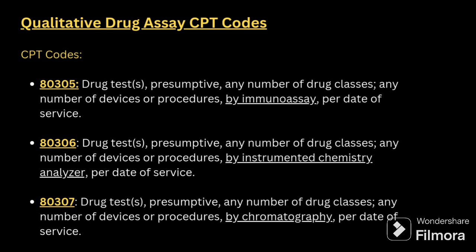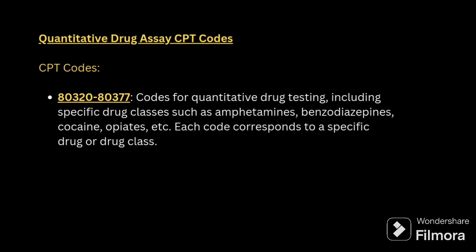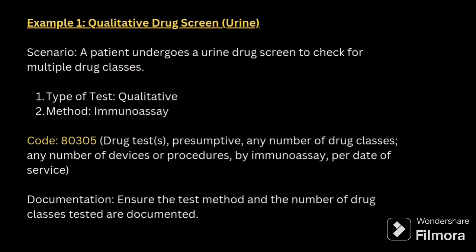80305 — the drug test is done by the immuno-assay method. 80306 is done by an instrumented chemistry analyzer, and 80307 by other methods. For quantitative assay, the code series starts with 80320-80377. It includes specific drug classes such as amphetamines, benzodiazepines, cocaine, opiates, etc. Each code corresponds to a specific drug.